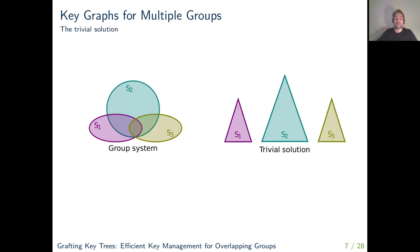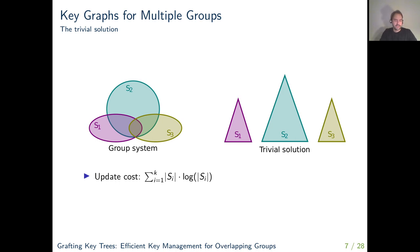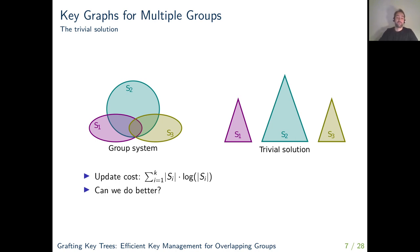The first example is the trivial way to construct a key graph: simply use the one-group solution in parallel, building one balanced binary tree per group. In this trivial solution, all users of one fixed group have an update cost equal to the logarithm of the group size. Summing over all users in a group gives group-size times log(group-size), and summing over all groups gives the total update cost as the sum of group-sizes times their logs. The main question is: can we do better than this?